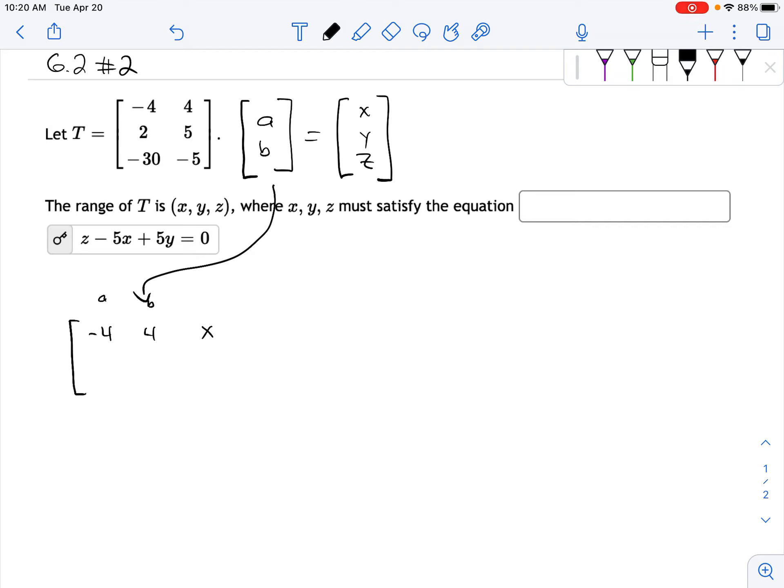and we're going to write it as an augmented matrix. This would be like the a column and b column here. So you get negative 4, 4x, 2, 5y, negative 30, negative 5z.